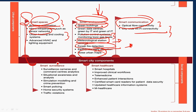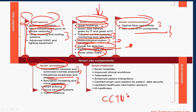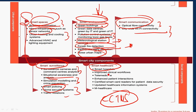Smart surveillance components include surveillance cameras, command center analytics, situational awareness and analysis, simulation modeling, crime prevention, and smart policing using CCTV cameras and home security systems to handle traffic violations. Cities are major targets of terrorist activities, so surveillance is critical. In smart healthcare, the components include smart hospitals, improved clinical workflows, telemedicine, enhanced patient interactions, certified smart card readers for patient data security, and mobile healthcare.